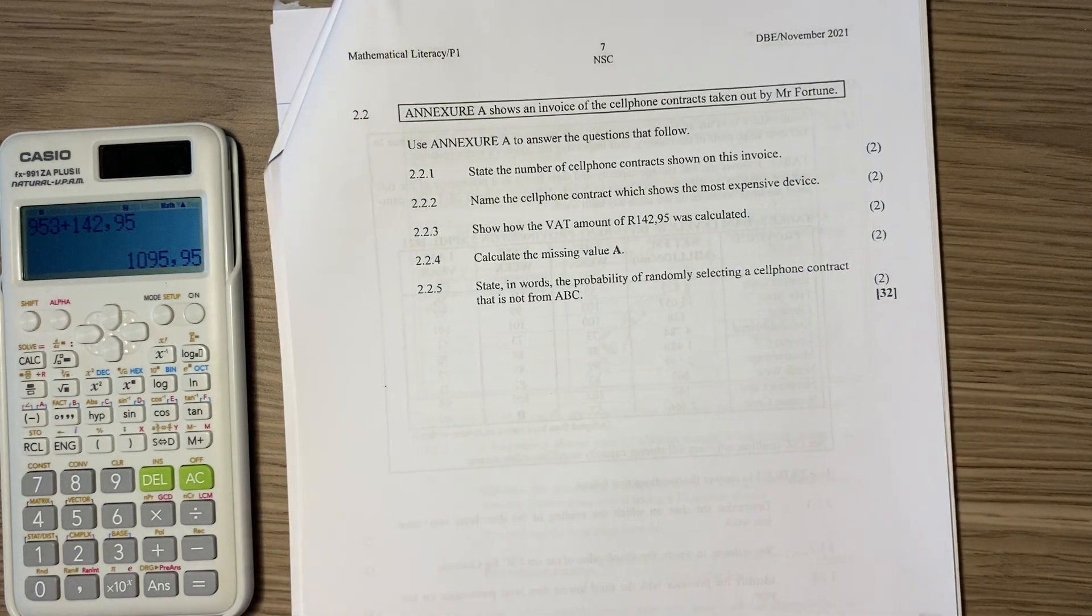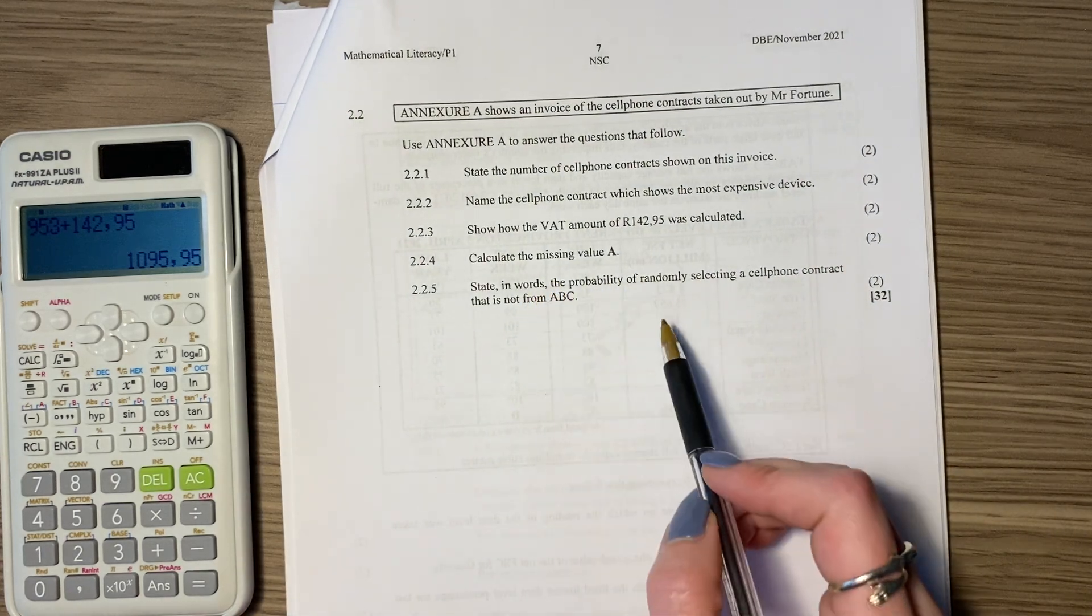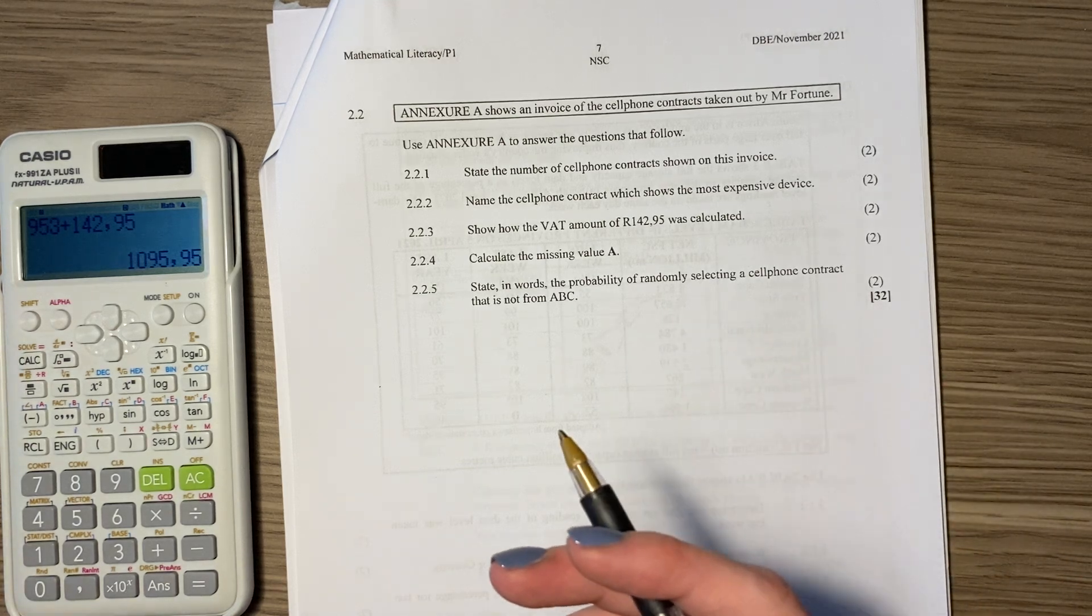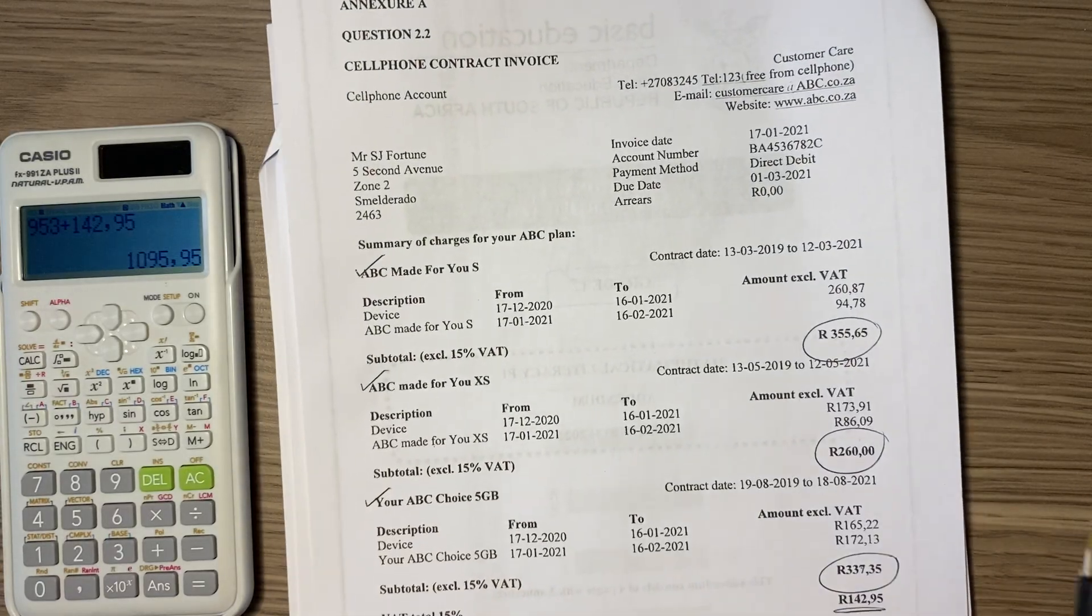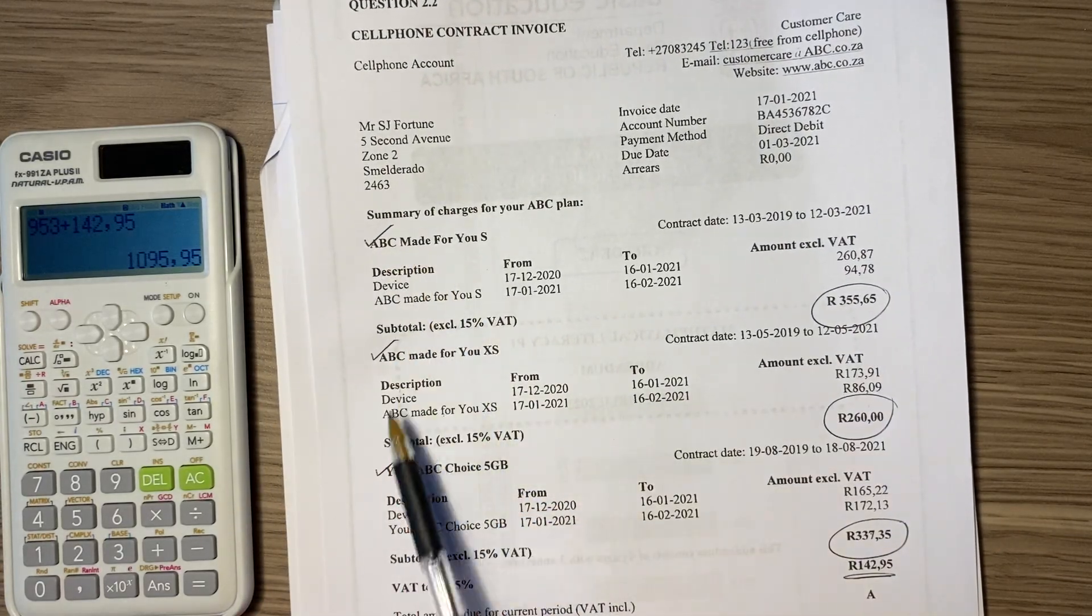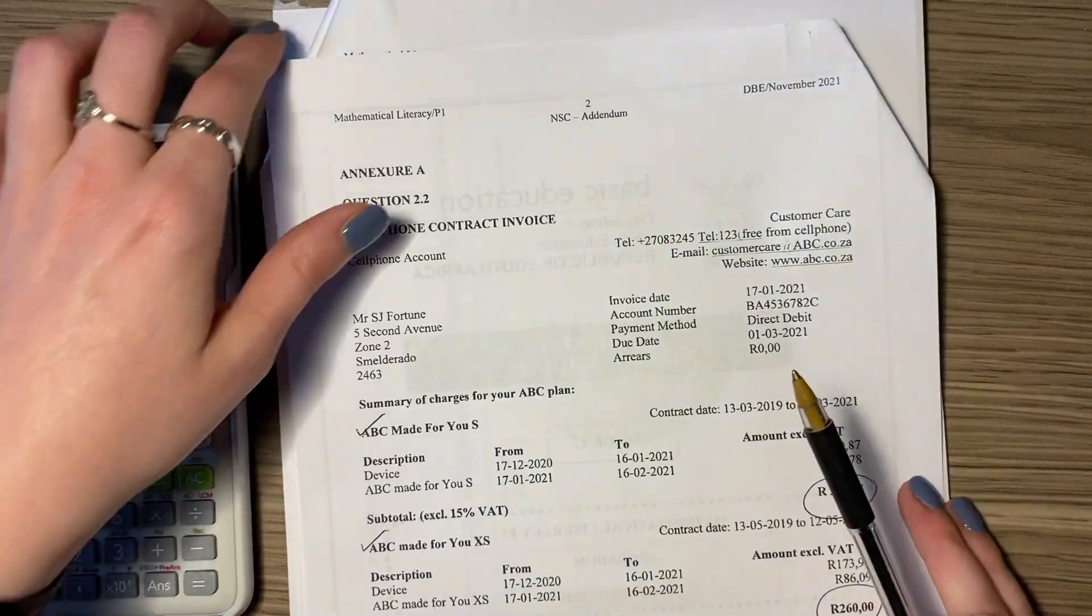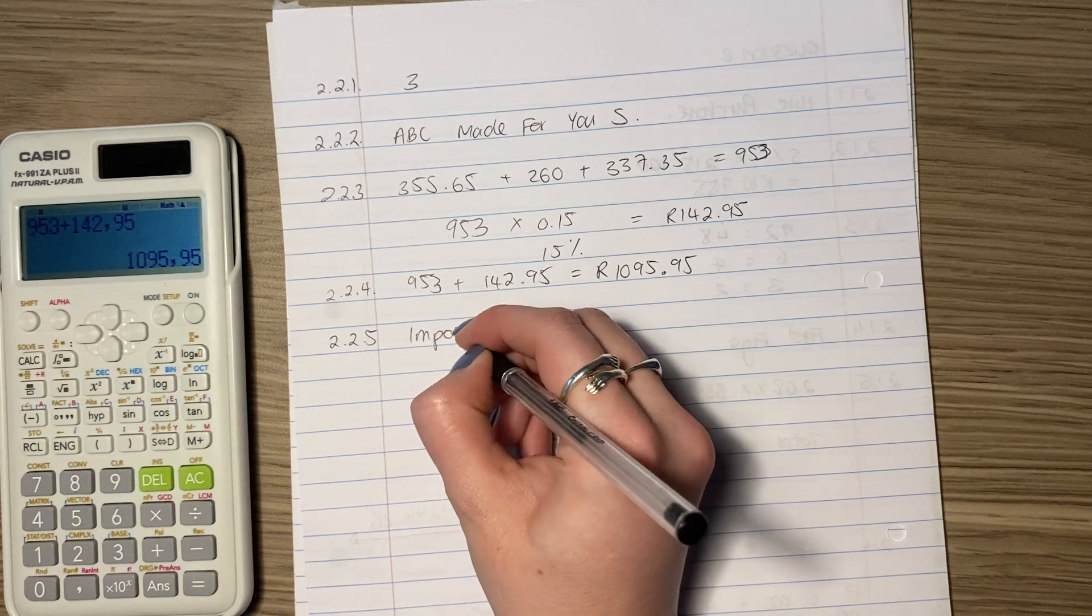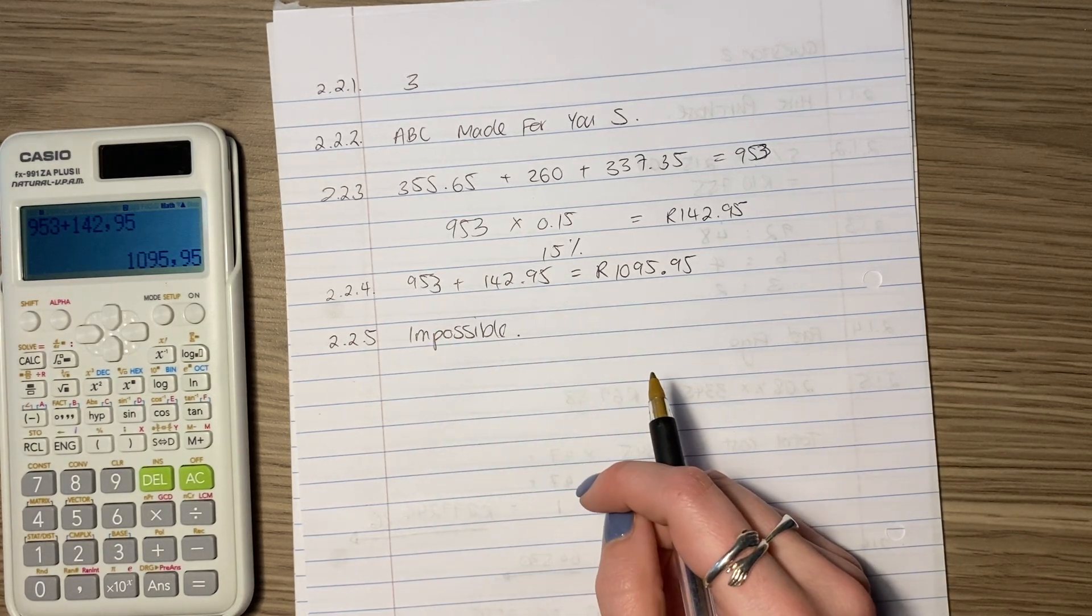State in words the probability of randomly selecting a cell phone contract that is not from ABC. Well, I think the probability is zero or impossible because that's ABC, that's ABC, and that's ABC. There's no contract here that's not ABC. So if you want to state in words, you can just say impossible or zero, and that's us done.